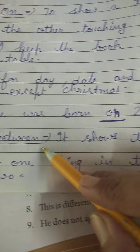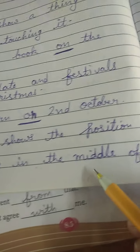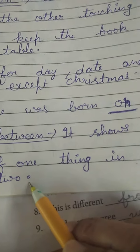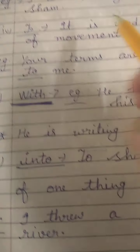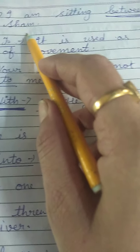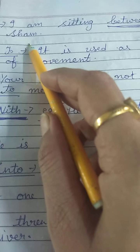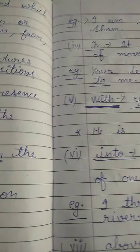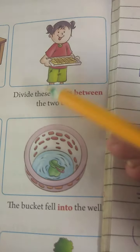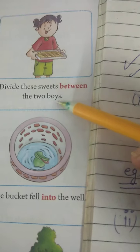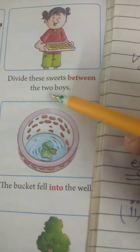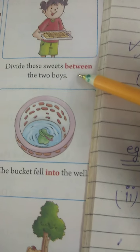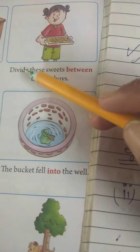Next is 'between'. It shows the position of one thing in the middle of two. For example: I am sitting between Ram and Sham — we are showing the position of I in the middle of two persons, Ram and Sham. So we use the preposition 'between'. For example: divide these sweets between the 2 boys. Here we are specifying 2 boys, so if we are talking about 2 persons, we use 'between'.